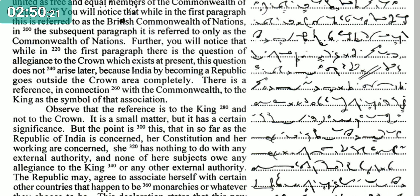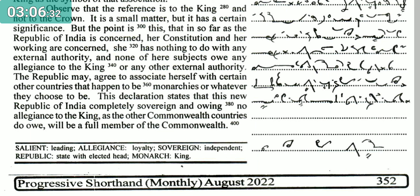The point is this: that in so far as the Republic of India is concerned — her constitution and her working — she has nothing to do with any external authority. The Republic may agree to associate herself with certain other countries that happen to be monarchies or whatever they choose to be.